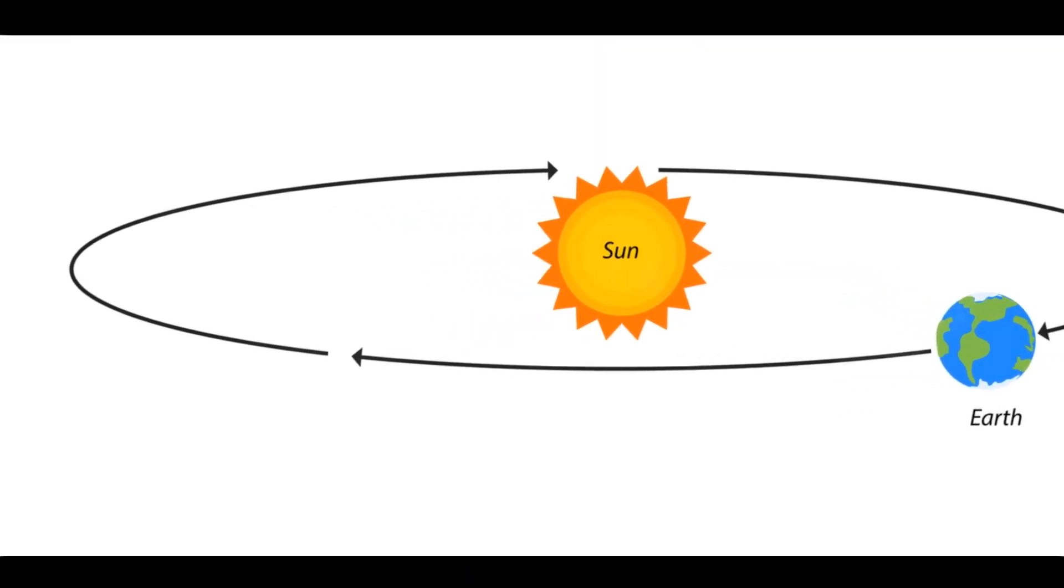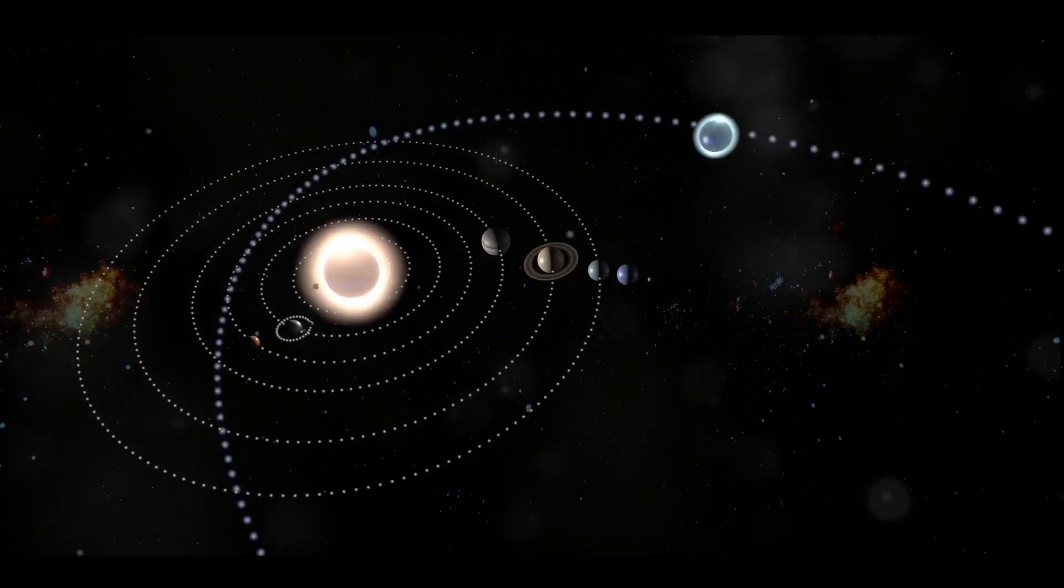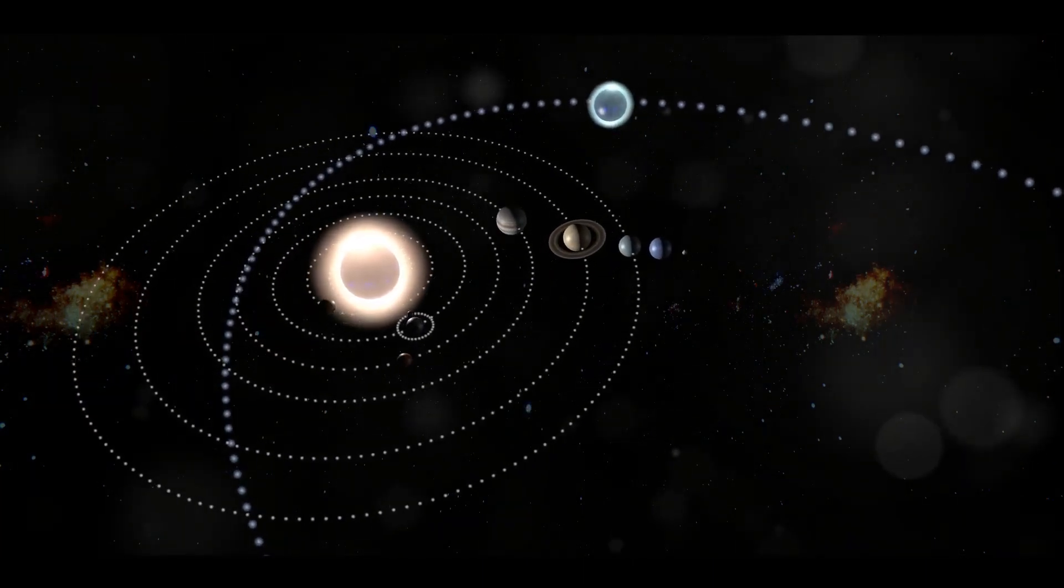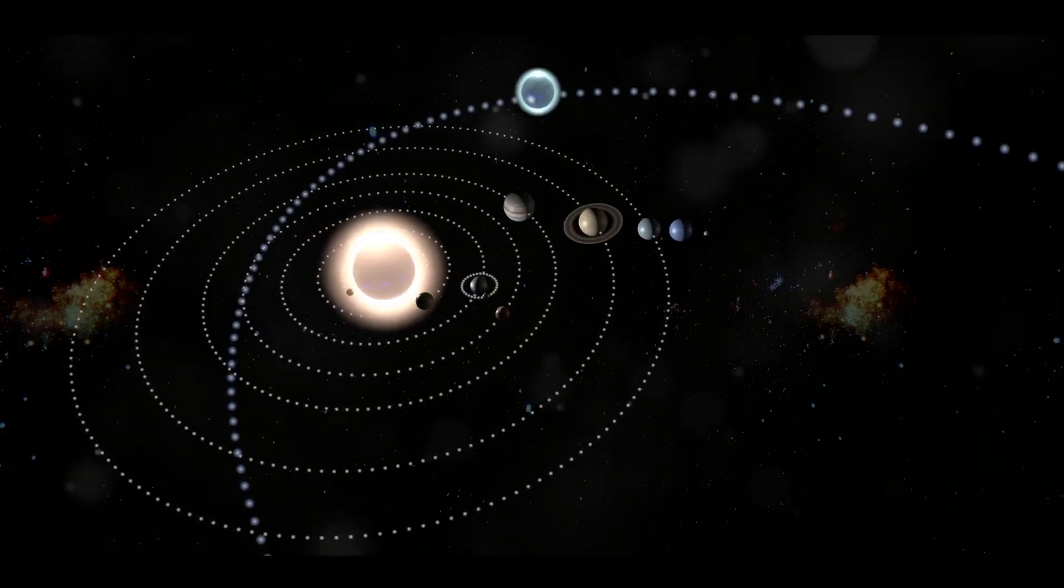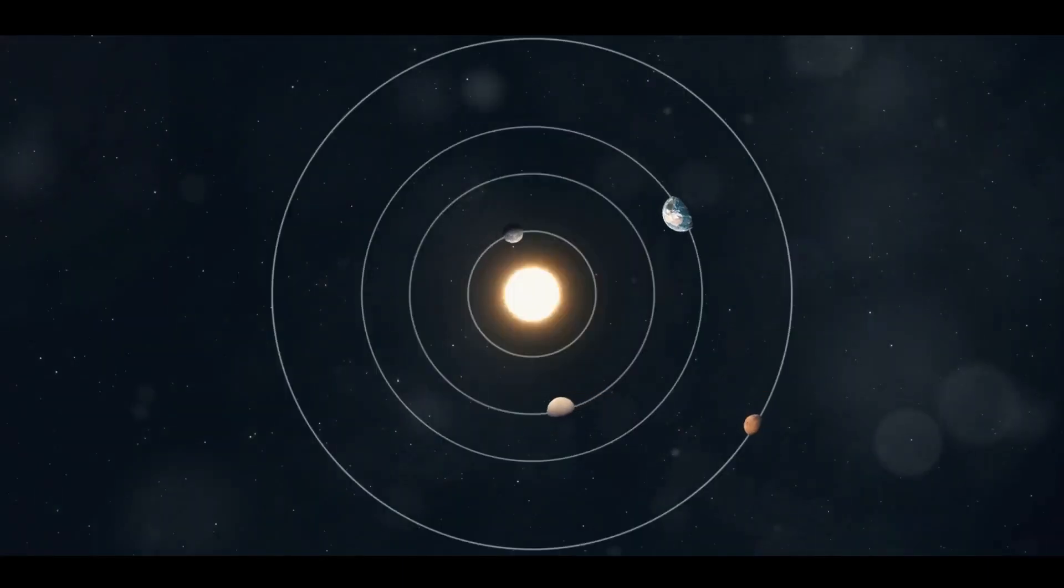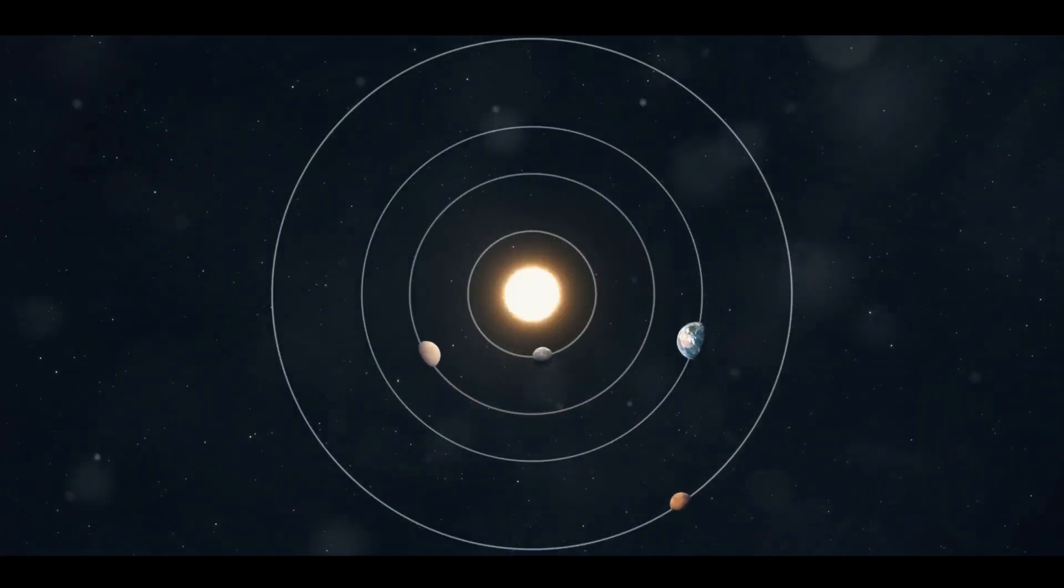Eris also boasts a highly elliptical orbit taking a staggering 556 Earth years to complete one journey around the sun. This means that a year on Eris is equivalent to over half a millennium here on Earth. That's a lot of birthday candles.